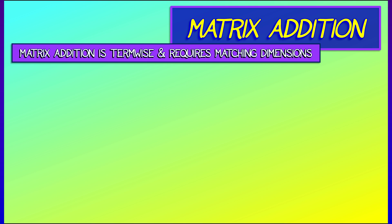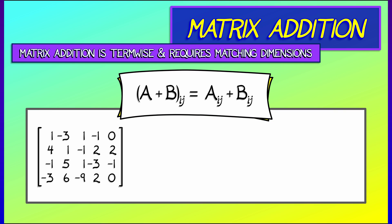Matrix addition is term-wise. The only thing it requires is matching dimensions. If I have two matrices of the same size, A and B, then to add them together, I take each entry in row I and column J and add them.